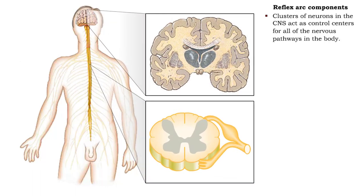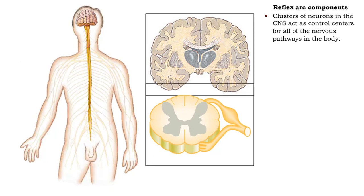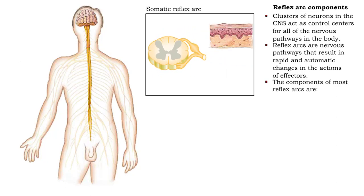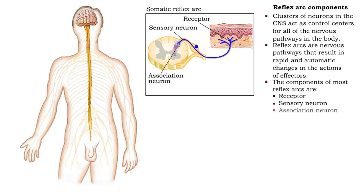Association neurons in the brain and spinal cord act as control centers for nervous pathways. Rapid automatic responses to changes in environmental conditions occur due to nervous pathways called reflex arcs. The components of most reflex arcs are receptor, sensory neuron, association neuron, motor neuron, and effector.